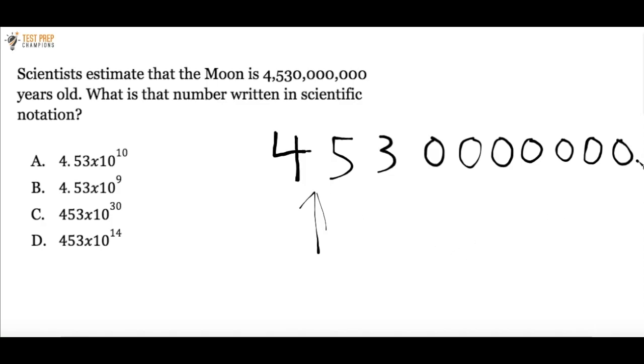And where is our decimal now? Well right now the decimal is at the end of the number. So we want to take this decimal and we want to count how many places we have to move it to get the decimal after the first number. So we would go 1, 2, 3, 4, 5, 6, 7, 8, 9.